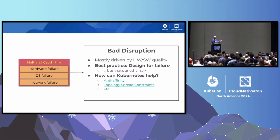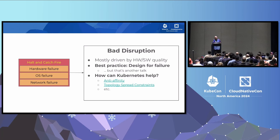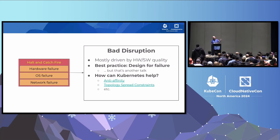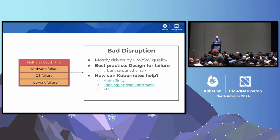Now we can look at the previous taxonomy and describe best practices around these disruptors. For the broad halt-and-catch-fire category, it's mostly bad disruption, driven by hardware and software quality. Your best practice here is to design for failure. Kubernetes can also help with things like anti-affinity and topology spread constraints to keep pods apart on nodes — or apart within availability zones for replicated applications.